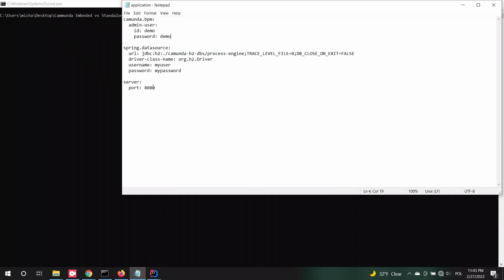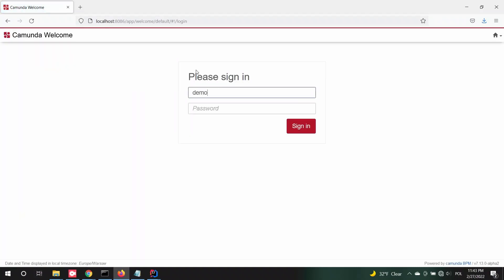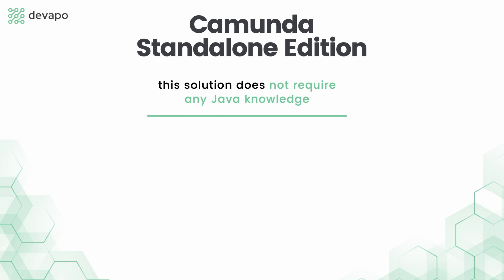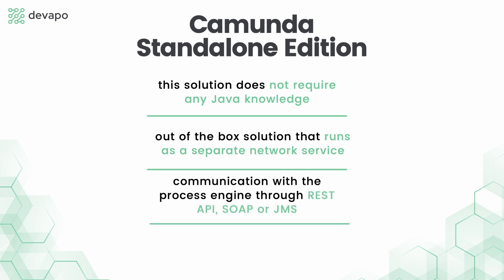The configuration is pretty easy and you can change almost everything regarding the server in the application.yml file. For instance, you can change the port to 8086, and if you rerun the application and go back to the browser you can see it is available on a different port. This solution requires no Java knowledge whatsoever — it is an out-of-the-box solution that runs as a separate network service. Remote applications in this architecture can communicate with the process engine through REST API or other channels like SOAP web services or JMS, although this would require some custom implementation by the engine users.